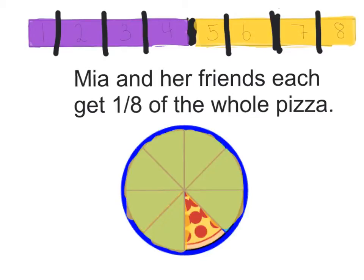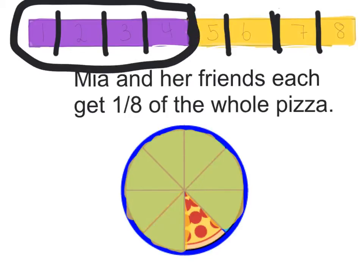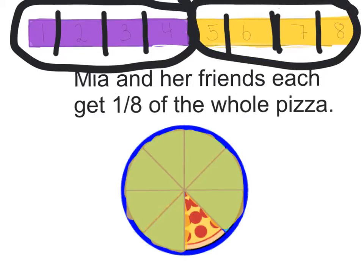Now, I'll draw a picture to prove my answer. This fraction strip here is representing our pizza. Then, I took one half of it — the purple half — and divided it into four sections. I then divided the other half, the yellow half, into four sections as well.